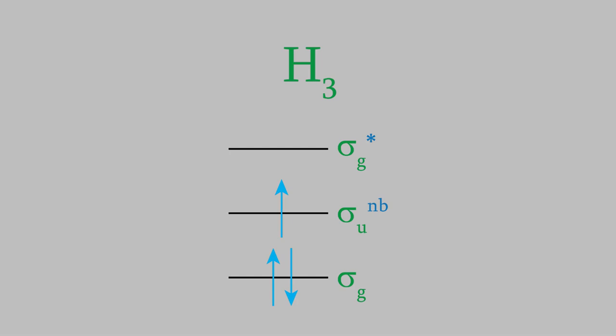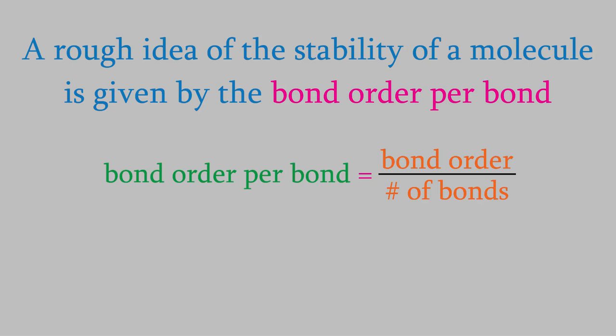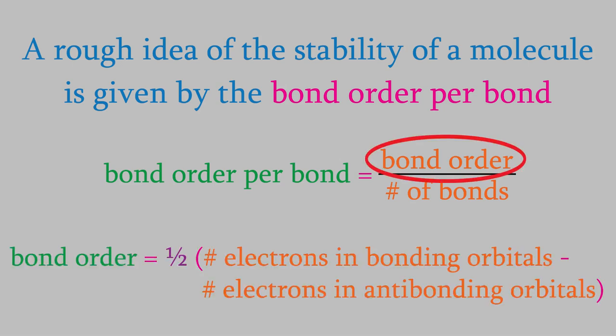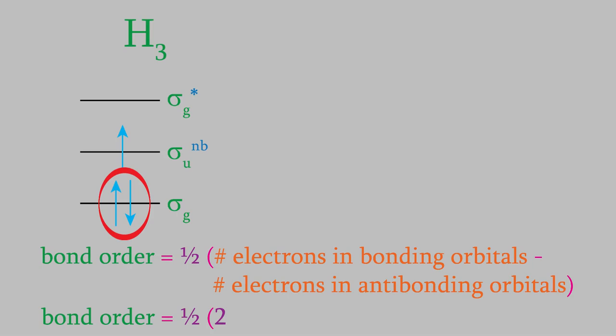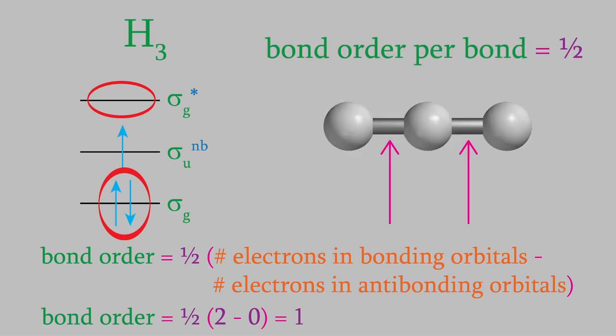How stable is this molecule? We can find out by calculating the bond order per bond — that is, dividing the bond order by the number of bonds. As you might remember from the last video, we get the bond order by counting the number of electrons in bonding orbitals, subtracting the number in anti-bonding orbitals, and dividing by two. In this case, there are two electrons in bonding orbitals and none in anti-bonding ones, so that gives us a bond order of one. To get the bond order per bond, we divide this by two, because there are two bonds. That gives us a result of one-half. A general rule of thumb is that in order for a molecule to be stable, the bond order per bond must be one or higher. Since this molecule has a bond order per bond of just one-half, that means H3 is an unstable molecule.